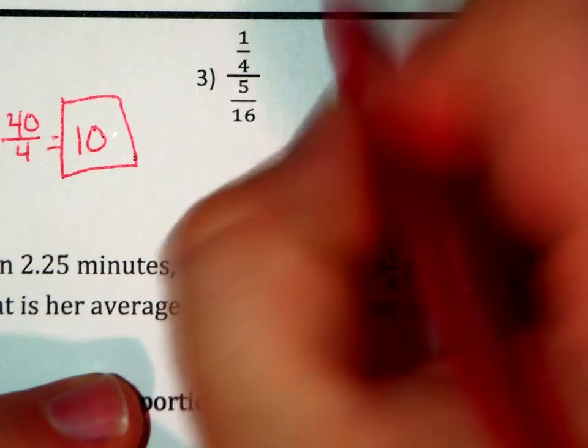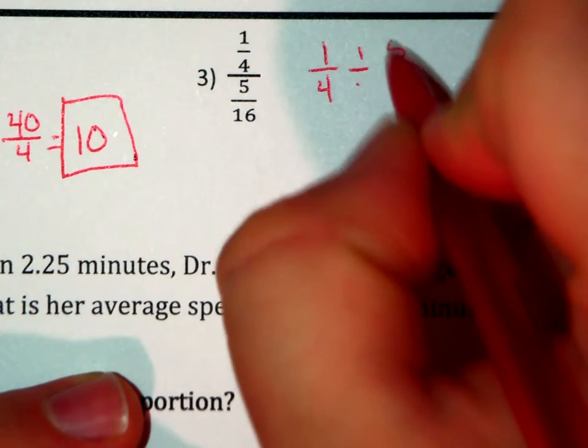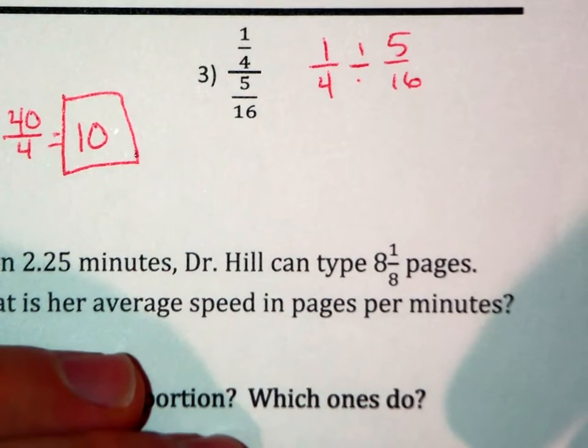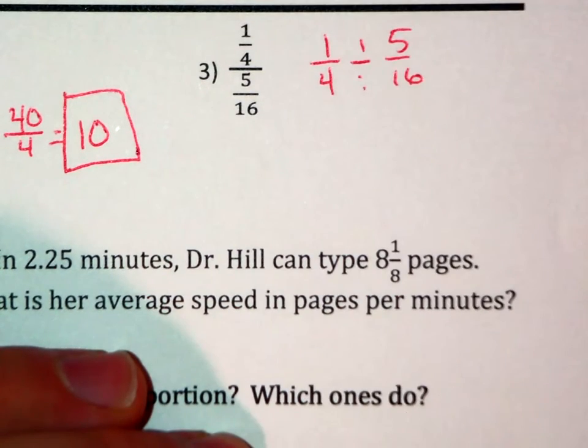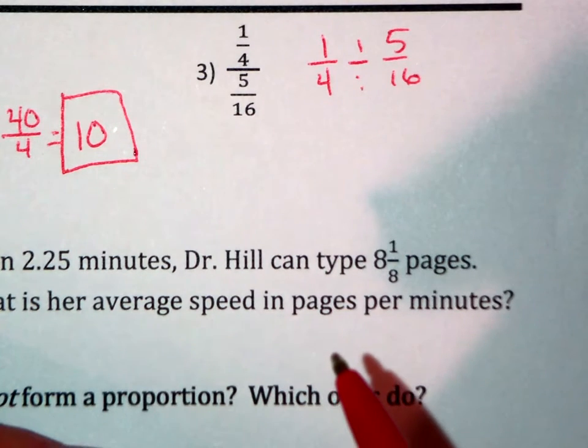Problem number 3. 1 fourth divided by 5 sixteenths. And yes, I realize it takes a little bit of extra time to write this extra step out, but I guarantee you the extra time is worth getting the problem right and getting the extra points on your test.